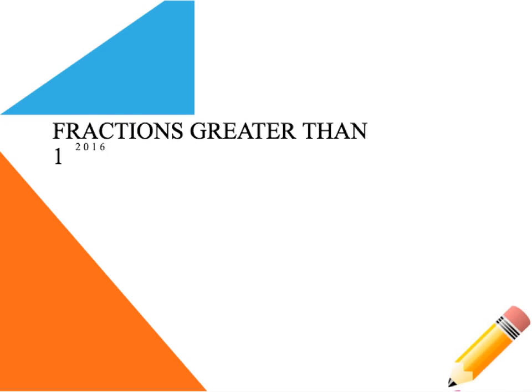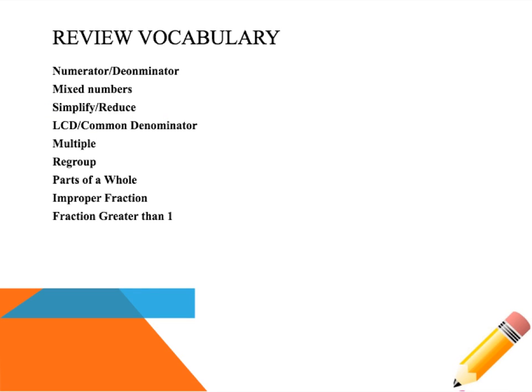This lesson is on fractions greater than one and regrouping — two skills you'll really need when it comes time to add and subtract with mixed numbers that do not have common denominators. A little vocabulary review: numerator and denominator are the top and bottom portions of a fraction. A mixed number is a whole number and a fraction together. Simplify and reduce means getting a number into its smallest form. Lowest common denominator means making sure both fractions have the same denominator at its lowest value.